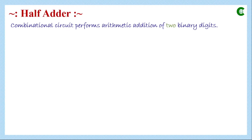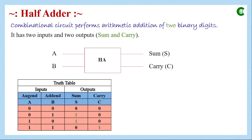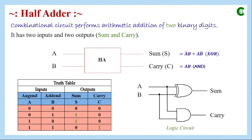A half adder, as we have discussed in our last class, is a combinational circuit which performs arithmetic addition of two binary digits. It has two inputs and two outputs — sum and carry. This is the block diagram of a half adder where A and B are inputs, S stands for sum and C stands for carry. From the truth table, if we simplify sum and carry using a K-map, sum is the XOR operation between A and B, and carry is the AND operation between A and B.